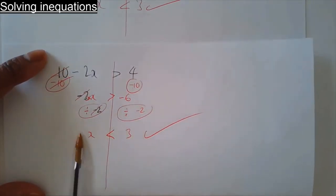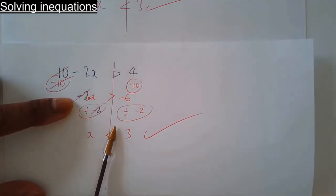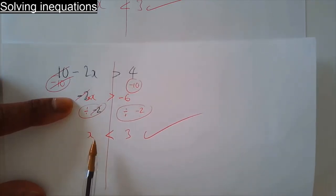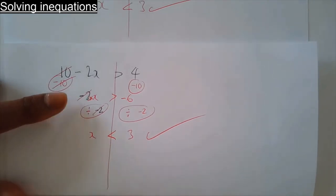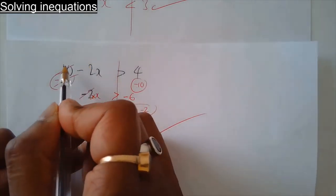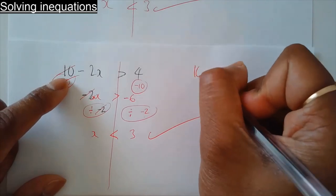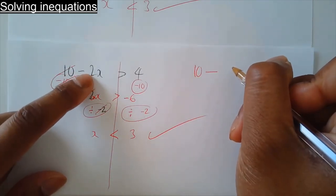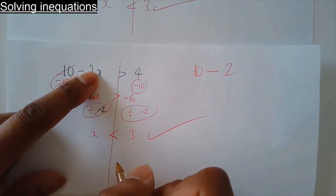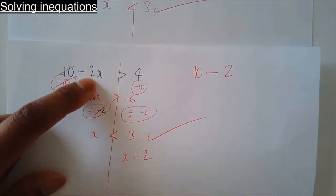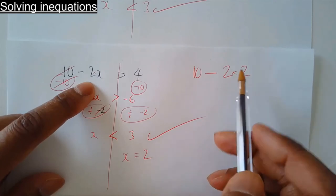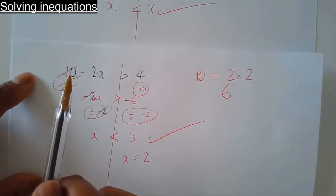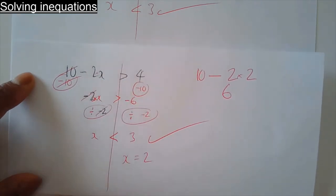I'm going to demonstrate to you why this works — the fact that I've changed the symbol going the other way, saying x has to be less than 3. Pick a number that's less than 3, for example x equals 2. I'm going to test 2 in this inequality: 10 take away 2 times 2. What are we replacing x with? 2. 10 take away 4 is 6. Ask yourself: is 6 bigger than 4? It's true. Let's try x equals 1: 10 take away 2 times 1 is 10 take away 2 equals 8. Is 8 greater than 4? It's true.